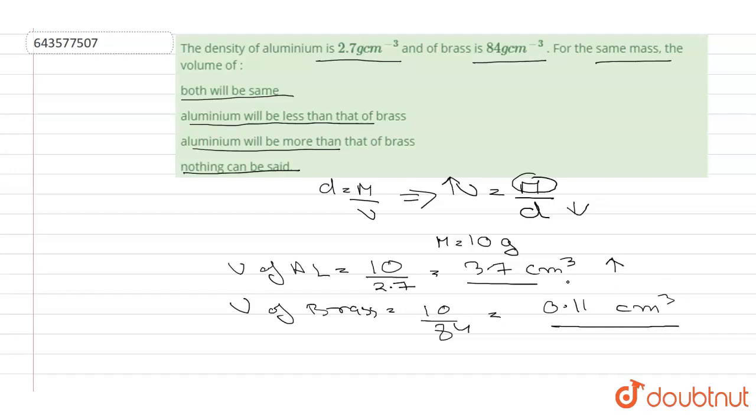So the correct option is Option C - aluminium will be more than that of brass.